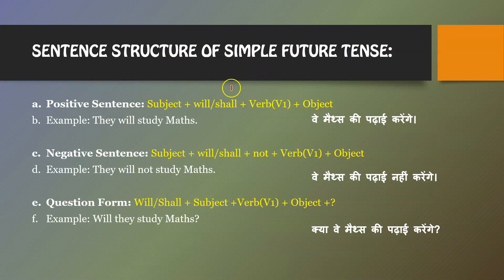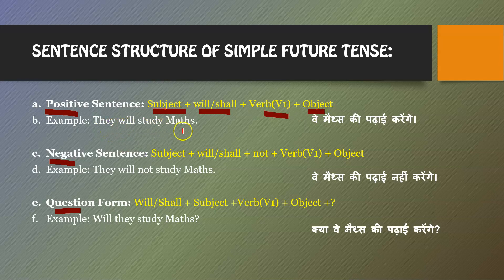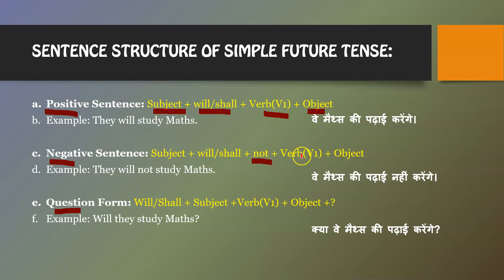The structure of simple future tense can have positive, negative, and question forms. For a positive sentence, the structure is: subject + will/shall + base form of the verb + object. For a negative sentence, we add 'not': subject + will/shall + not + base form of the verb + object.